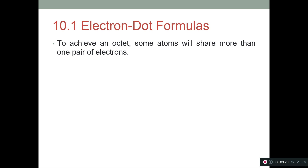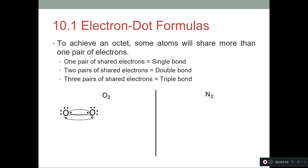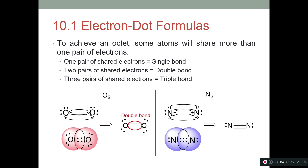To achieve an octet, some atoms will share more than one pair of electrons. If we have one electron from one atom and one from the other, that's called a single bond. If we have two unpaired electrons from one atom and two from the other, that is called a double bond. Three from one and three from the other, that's a triple bond. With oxygen, we share two unpaired electrons to form a double bond. With nitrogen, we have three unpaired electrons and form a triple bond. For a double bond we draw two lines, and for a triple bond we draw three lines.